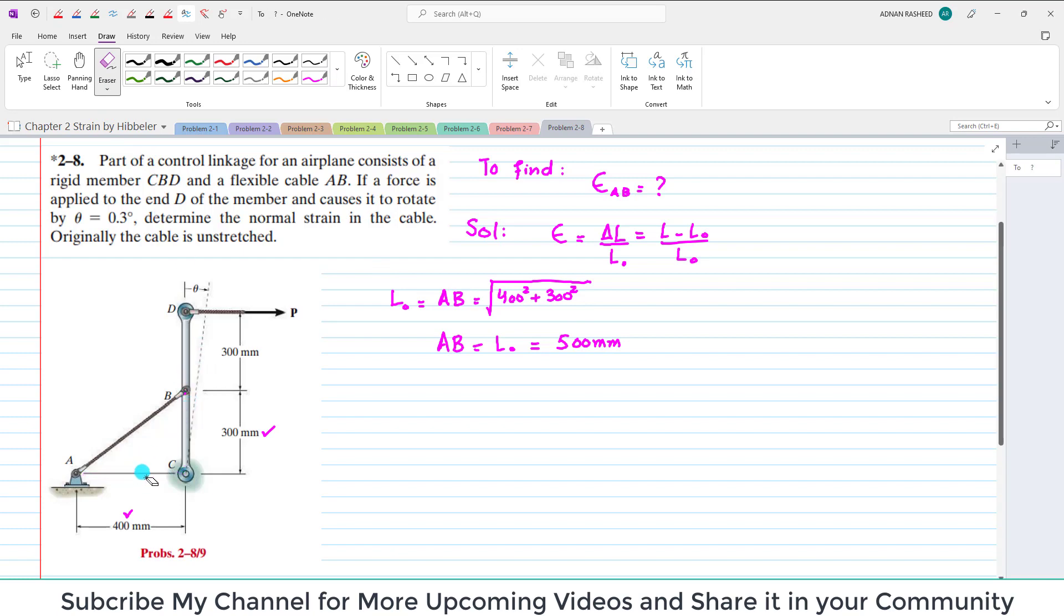Now it is given that due to this force P, this moves, this rotates an angle of theta. And this moves over here. Now the angle is not, this is not a right angle triangle. So we will find this angle. The total angle is now 90.3 degrees. So by using the rule of cosine, you can find this length.